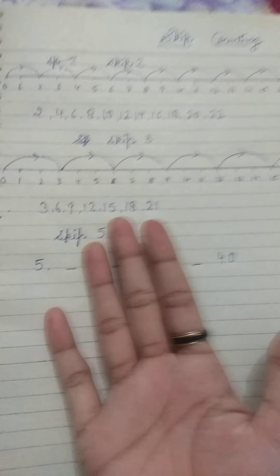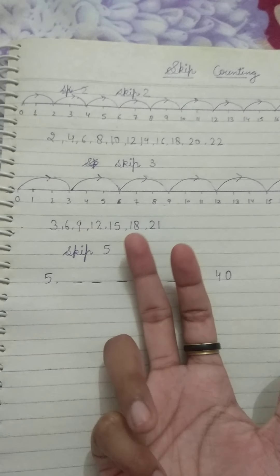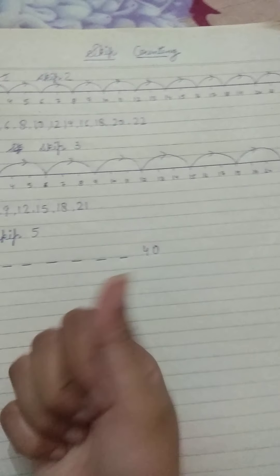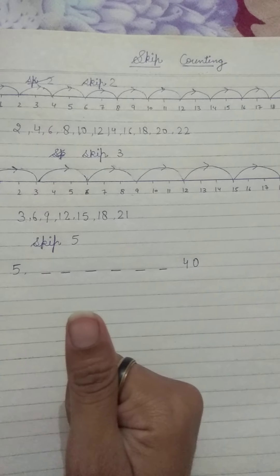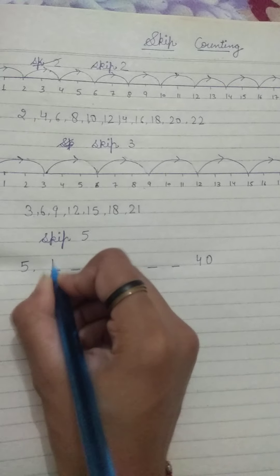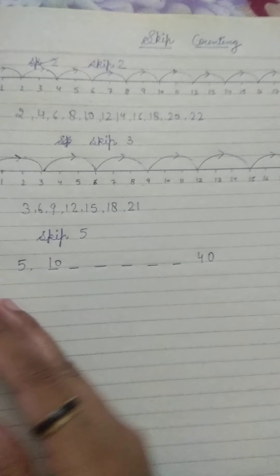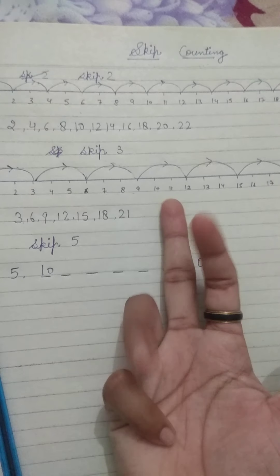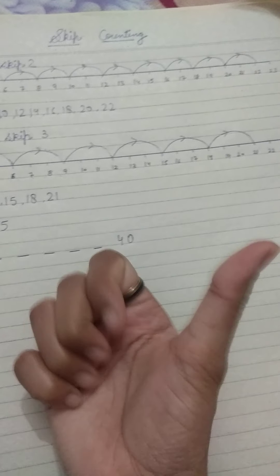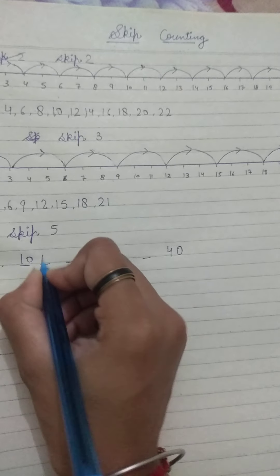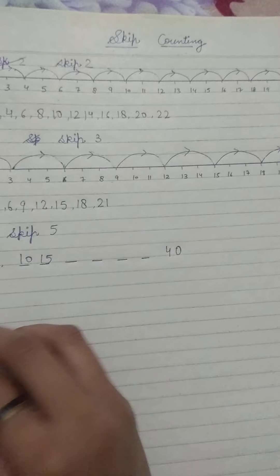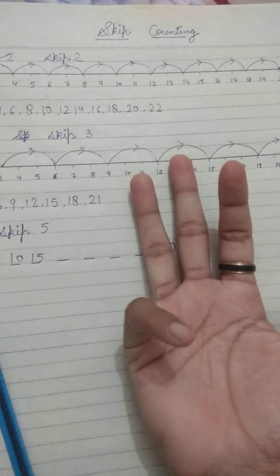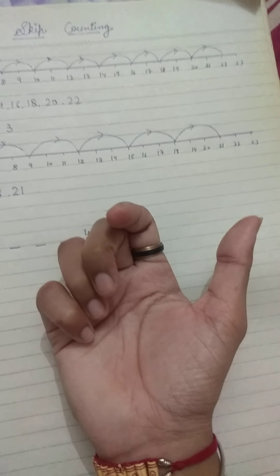After 5 — 6, 7, 8, 9 — then we write 10. Again: 11, 12, 13, 14 — then 15. Again: 16, 17, 18, 19 — then 20.